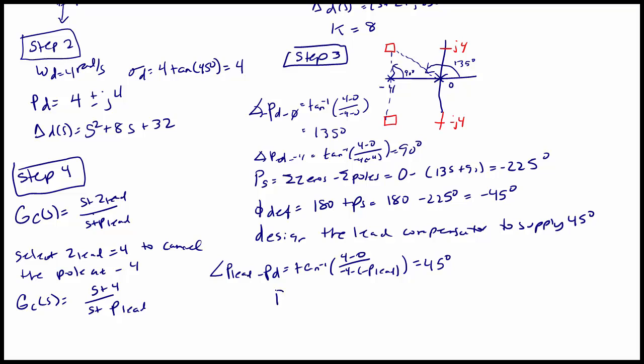And I know that this angle has to be 45 degrees in order to compensate for my deficiency. So when I solve this, this yields P lead is equal to 8. So if we look at this with respect to the root locus, what we have here is the original pole at the origin, the original pole at negative 4.